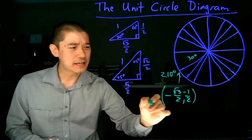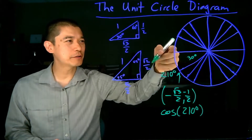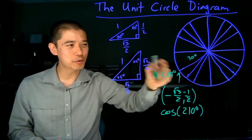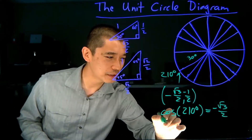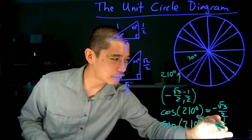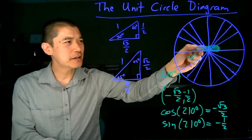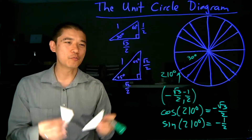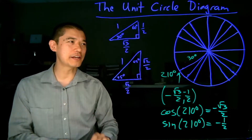What this means is that cosine of 210 degrees — which is the x-coordinate on the unit circle corresponding to the angle 210 degrees — is negative square root of 3 over 2, and sine of 210 degrees is negative one half.